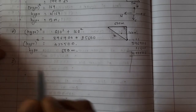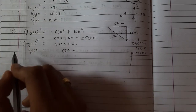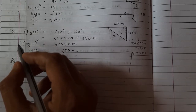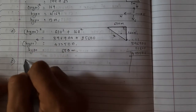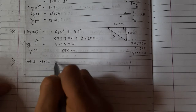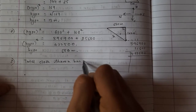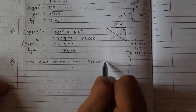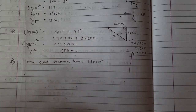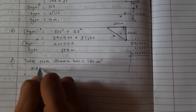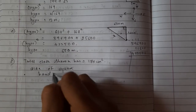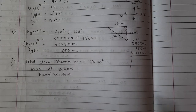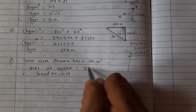Sharon has a piece of cloth of area 170 cm². Can she make a square handkerchief with each side 12.5 cm? Total cloth Sharon has = 170 cm². We need to find the area of a square handkerchief with side 12.5 cm to check if it is possible.